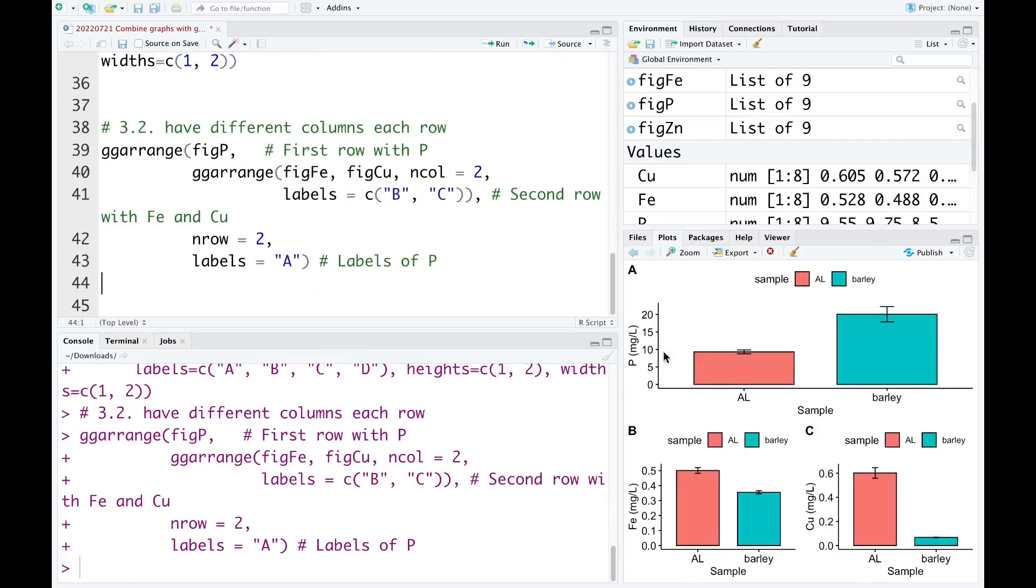As you can see now, the first row is phosphorus labeled A, and the second row has two figures: iron and copper. If you want to use the same legend for all three figures, you can use common.legend = TRUE as we've already seen above.